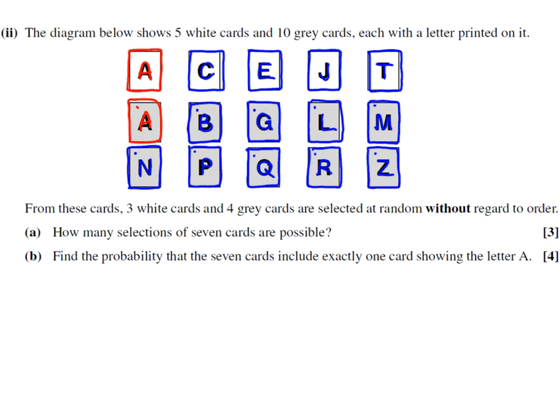If we want three white cards, at first we're only picking from the top row. So we've got five cards to pick from and we want to choose three, because order doesn't matter. For the grey ones, we've got ten cards and we want to pick four. So we do 10 choose 4. We want to multiply these probabilities to account for the different possibilities and we get an answer of 2,100. That's the total number of ways that you can pick seven cards where three are white and four are grey.